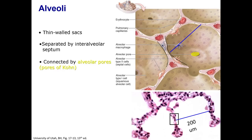The alveolar pores, or pores of Kohn, penetrate the septa and connect neighboring alveoli that are connected to different bronchioles. This helps to equalize air pressure, helps when bronchioles are blocked, and allows macrophages to travel freely. However, they also allow the rapid spread of bacteria or neoplasms within the alveoli.